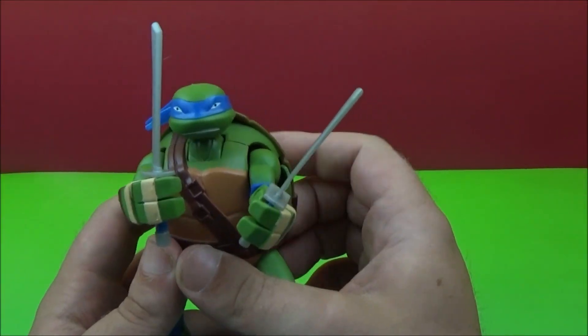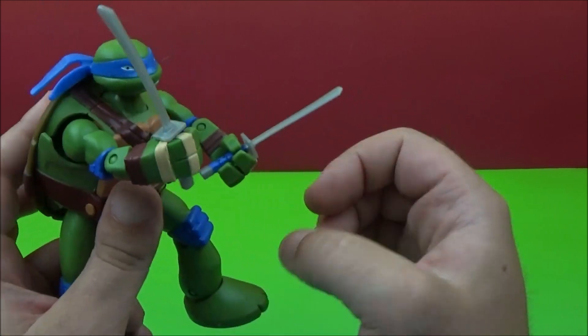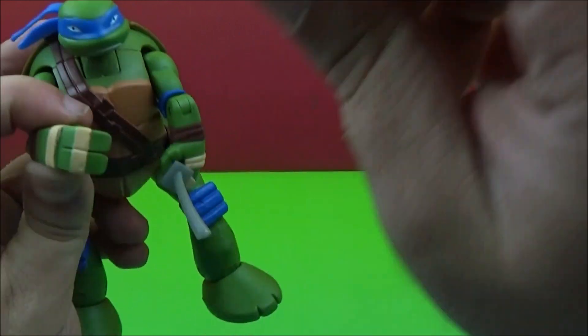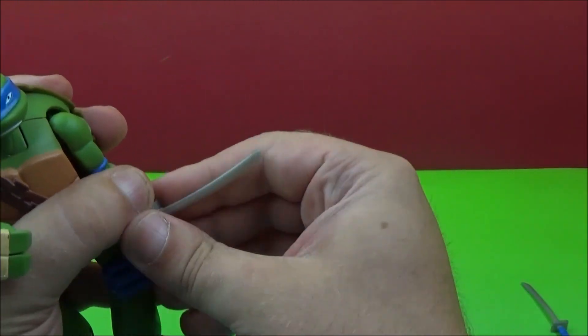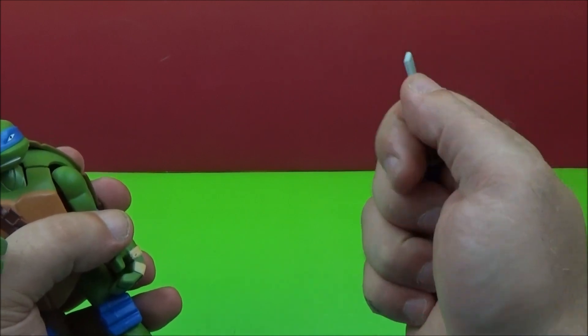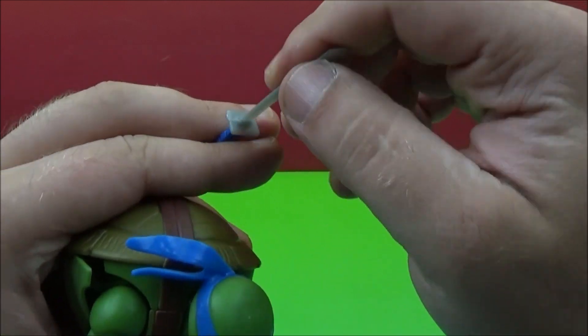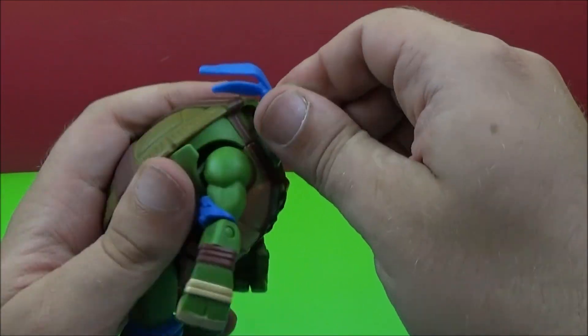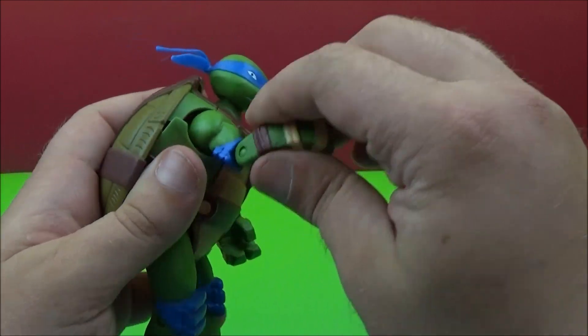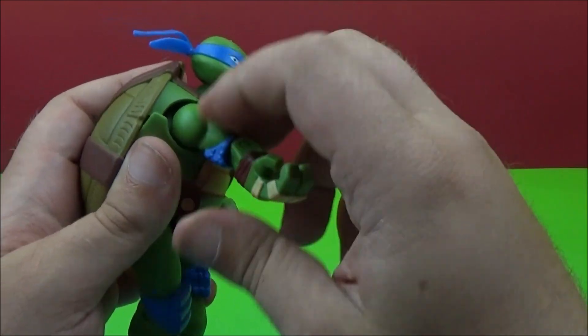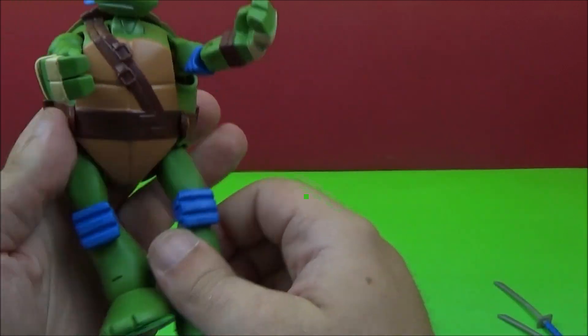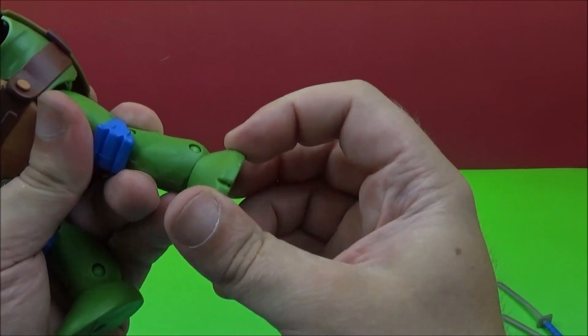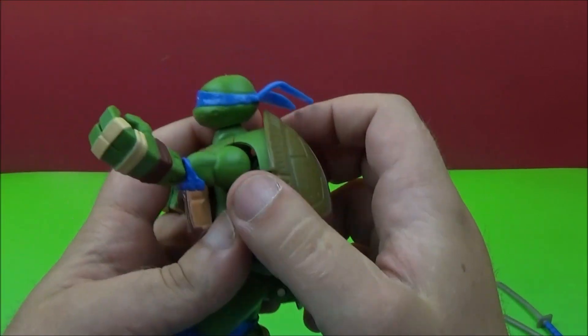First up we have Leonardo and he is the leader with the blue bandana. So he comes with his two ninja swords here and they are pretty tight in there so you don't have any trouble losing those. The blade part is made of a flexible plastic whereas the handle is fairly tough. We have some movement with the head back and forth. The arms have some movement and articulation there at the elbow as well at the shoulder. Same over here and the legs are the same articulation. They bend like so and the foot has full articulation.